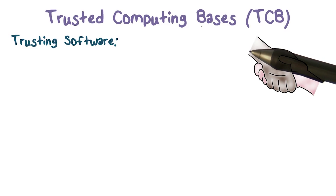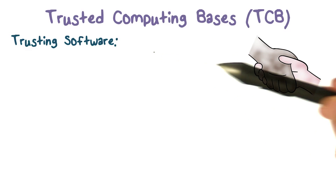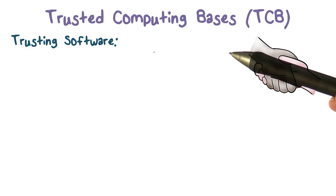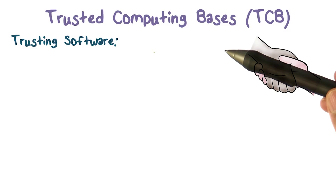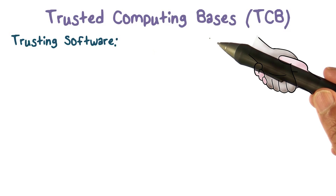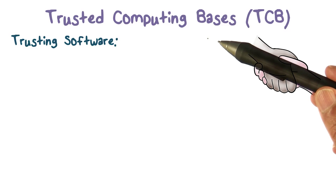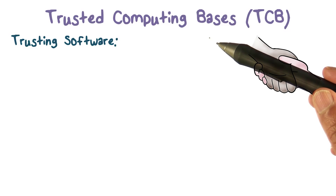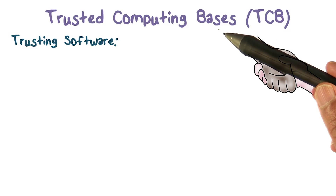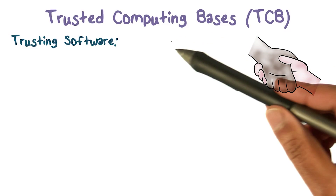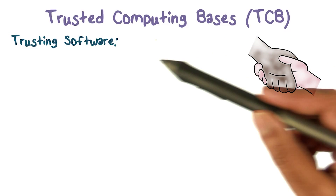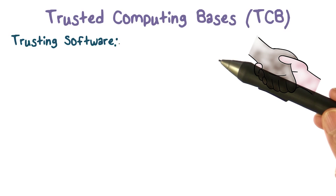The trusted computing base has direct access to the hardware. We said hardware is something we're going to trust — although you may have reasons to be suspicious of the hardware itself, we're not going to go there. So we're basically talking about how can we trust software.